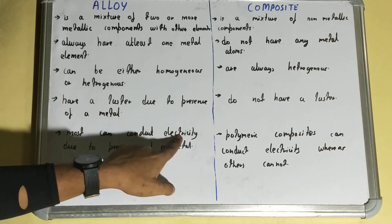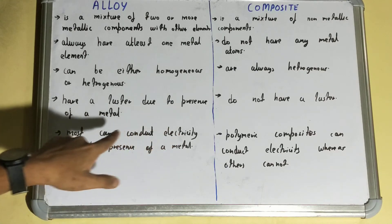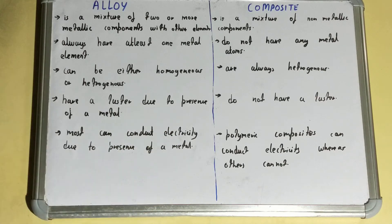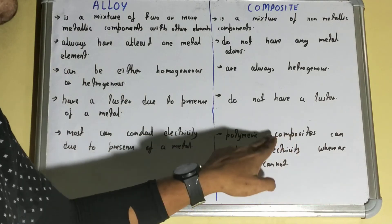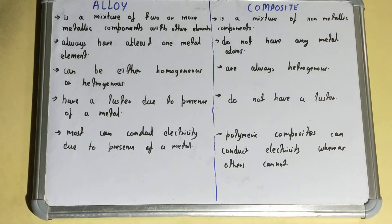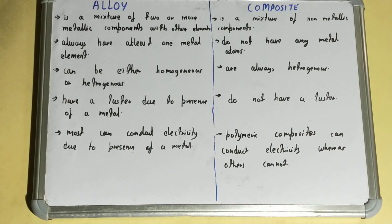Next, if we talk about the alloy, most alloys can conduct electricity because of the presence of metal in them. But if we talk about the composite, only polymeric composites can conduct electricity; other composites cannot conduct electricity. So this was all about the difference between alloy and composite.